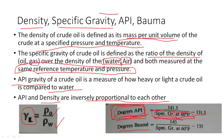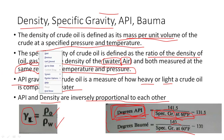The degree Baumé and degree API both give the same parameter — how heavy or light the crude oil is. The slight difference between the two series is that Baumé uses 140 instead of 141.5 in the numerator. In both series, specific gravity is measured at 60°F.